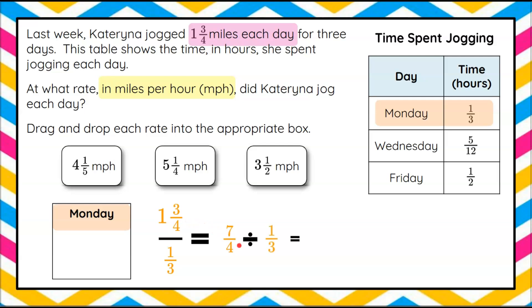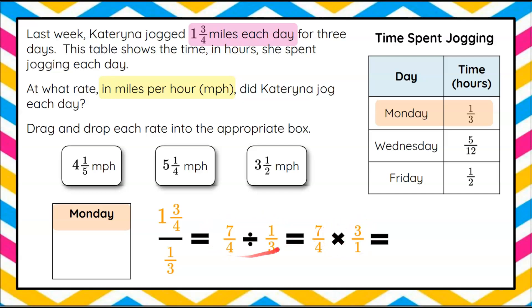We're going to rewrite this as division: one and three-fourths divided by one-third. I'm going to write one and three-fourths as an improper fraction — four times one is four, plus three is seven, so seven-fourths. To multiply or divide, we cannot use mixed numbers; we need improper fractions. So seven-fourths divided by one-third. To divide fractions, we multiply by the reciprocal. We're going to change from dividing one-third to multiplying by its reciprocal, three over one — equivalent expressions.